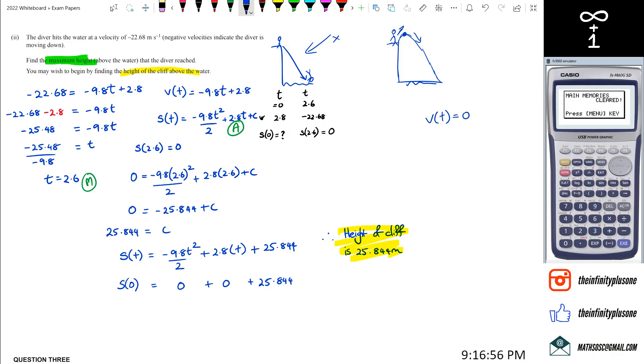What we're going to get is -2.8 = -9.8t, and then t = -2.8 ÷ -9.8. So this gives us t of—let me just work it out quickly.